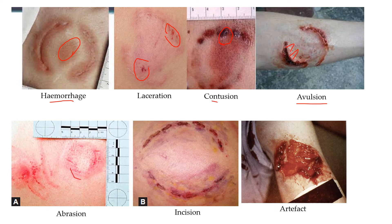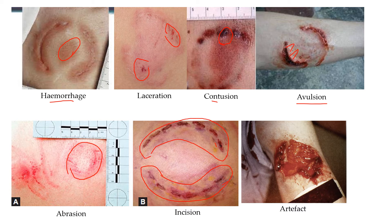Abrasion shows bruising patterns with the bite mark visible and reddish discoloration. Incised wounds show incisions at the sides of the teeth — the mandibular jaw below and the maxillary jaw above — with the pressure of the maxillary jaw inflicting incision wounds. Artifacts involve complete removal of tissue and muscle from the bitten area.